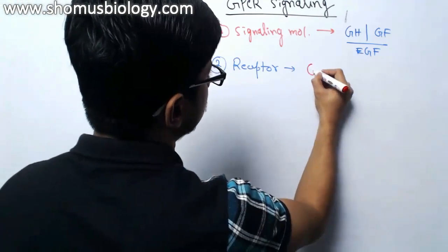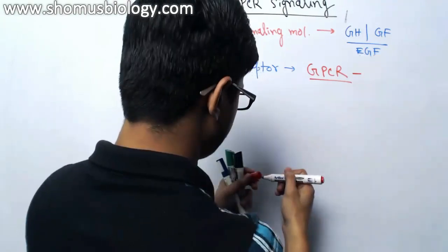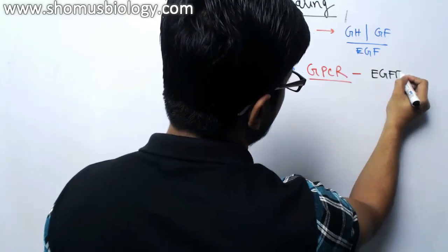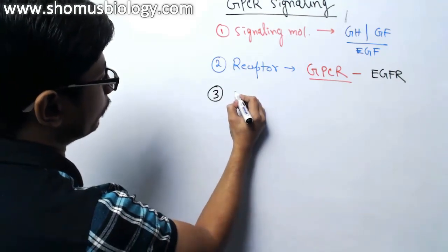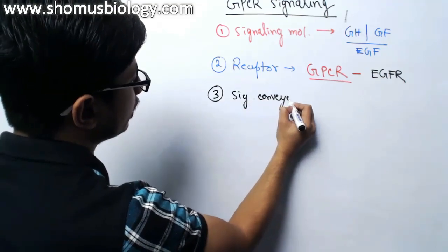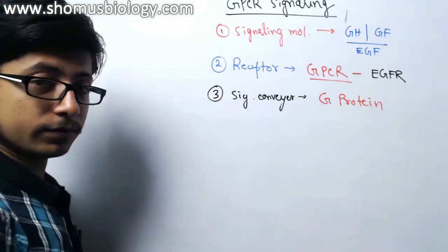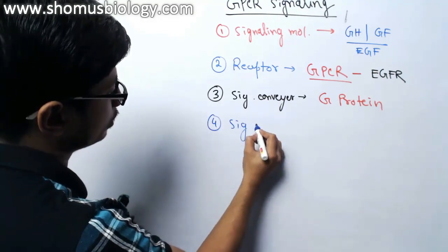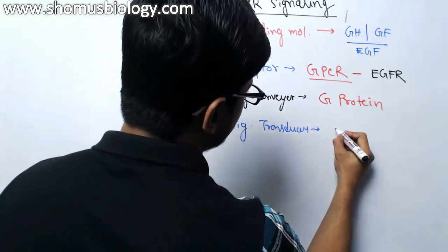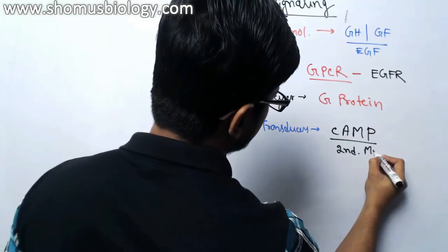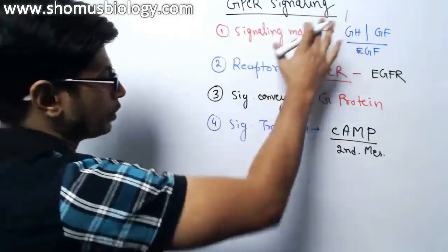The second component is the receptor. In this case, the receptor is the GPCR, or G protein-coupled receptor. When GPCR is bound with EGF, that type of receptor is named EGFR, or epidermal growth factor receptor. The third component is the signal conveyor, which is G protein. The fourth component is the signal transducer, which starts with cyclic AMP, also acting as a second messenger.